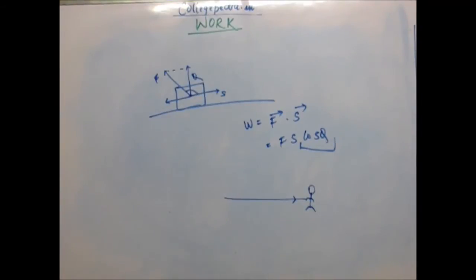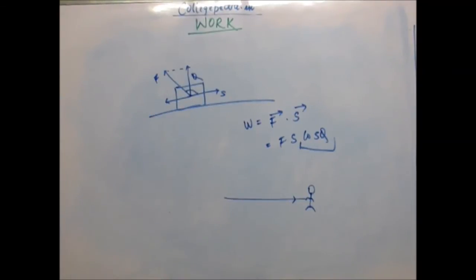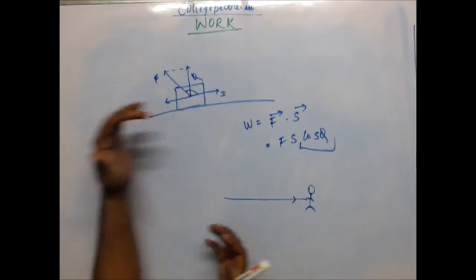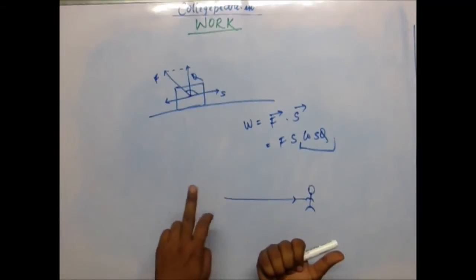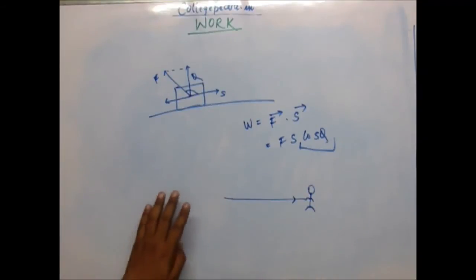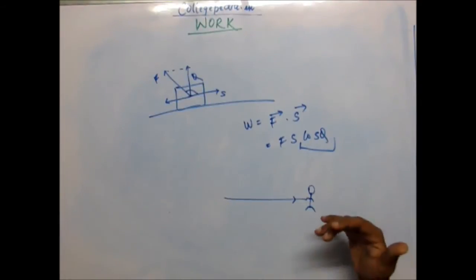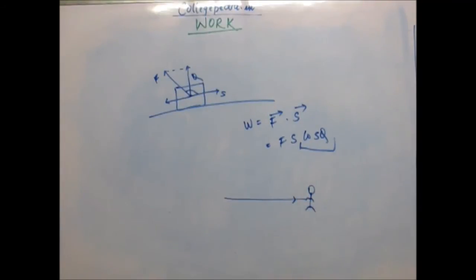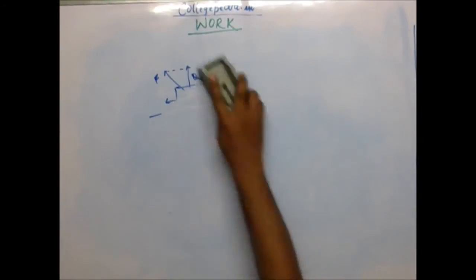We are calculating the work done by the agent which is applying this force. But since that agent will be dragged by the body which is having motion to its right, the work will not be done by the agent — the work will be done on the agent, because energy will be transferred to the agent. So the work done by the agent would be negative. Whenever an agent has negative work, it means work is done on it, not by it — that's what negative work means.